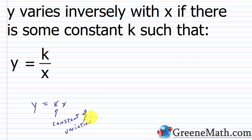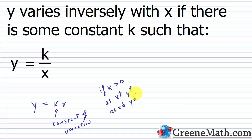We talked about a lot of things in that opening lesson. We discussed the fact that in this scenario if k was positive — if k was greater than zero — as x increases y increases and as x decreases y decreases. More specifically, as x increases by one unit y increases by k units, or as x decreases by one unit y decreases by k units.